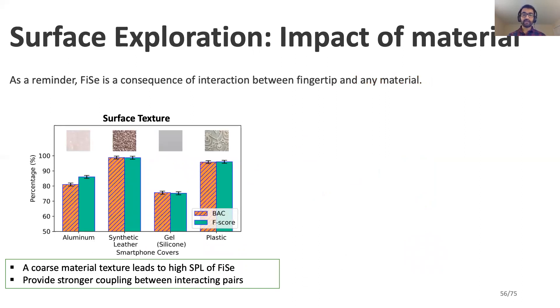For instance, to identify the impact of interacting surface, we asked users to swipe on different materials such as aluminum, synthetic leather, gel, and plastic. We observe high performance for high coarse texture such as synthetic leather or plastic, but lower for gel and aluminum. This is because high texture also provides a strong coupling between the interacting layers.